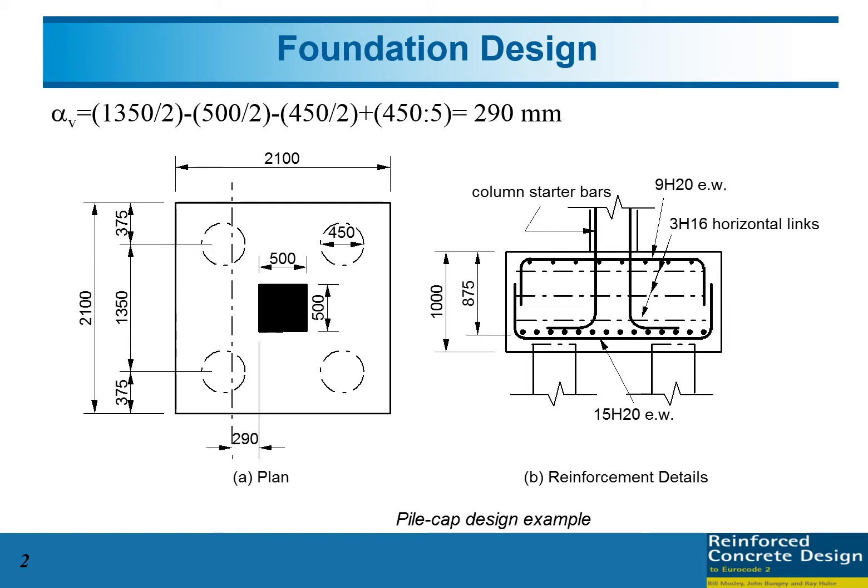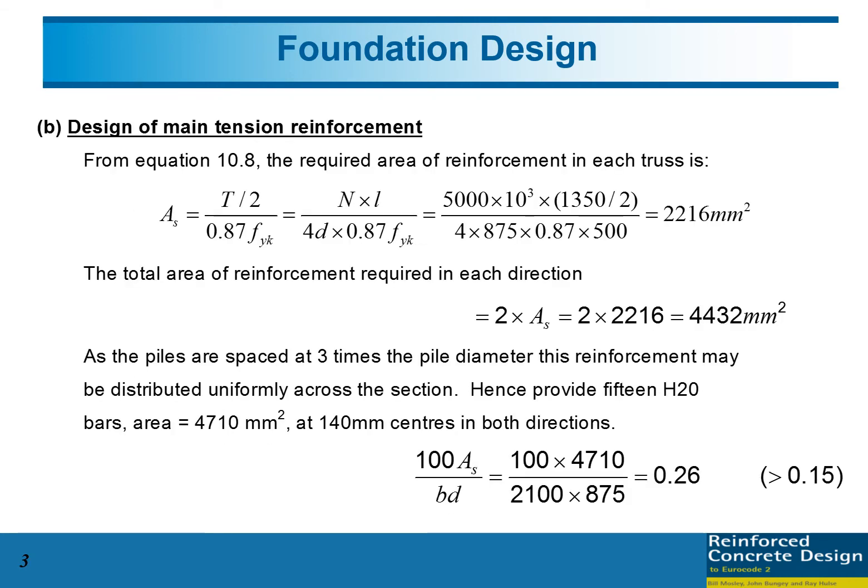First we need to design for the main tension reinforcement. Because we have four piles, we need to cut the section at the middle, so we need to design for two piles acting on the column.